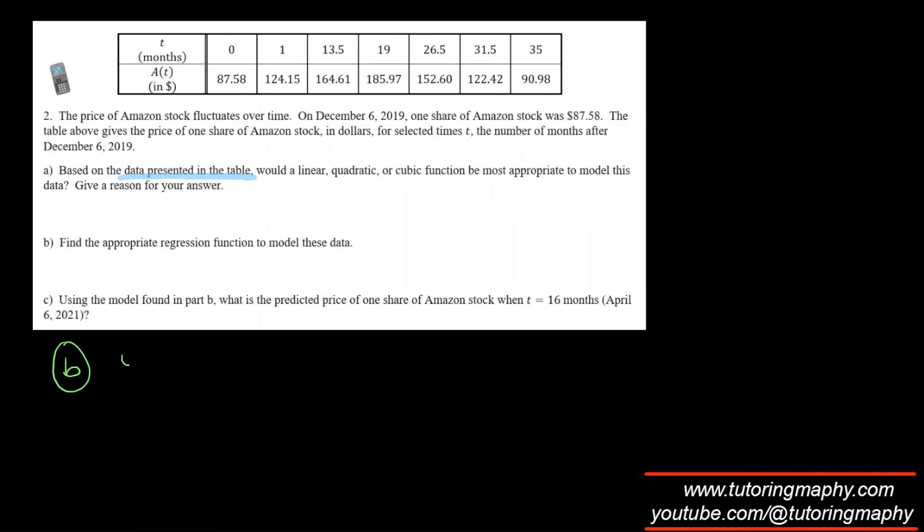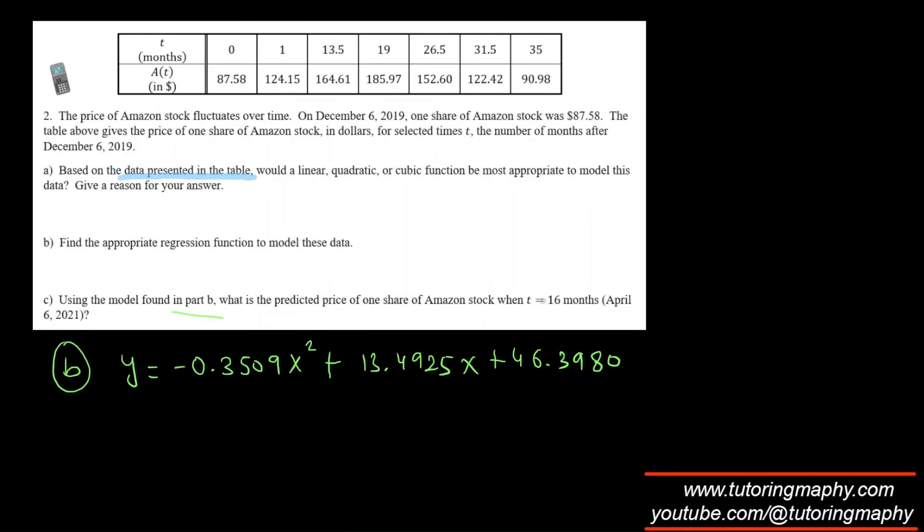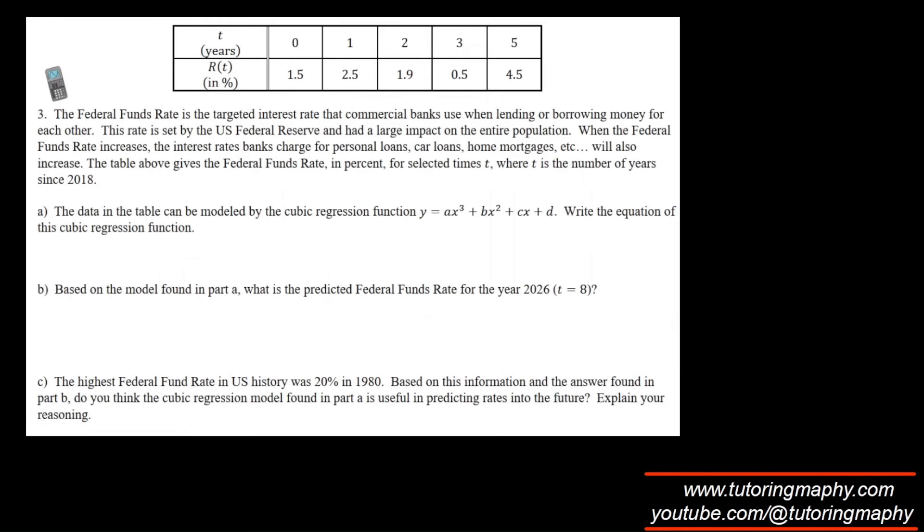The quadratic model here comes out as y equals negative 0.3509x squared plus 13.4925x plus 46.3980. We need to use this model to predict the share price when t is 16, so all we need to do is replace x with 16. When we replace x with 16 and type this into our calculator, the value of y or the price is $172.45. That is the answer to question two.